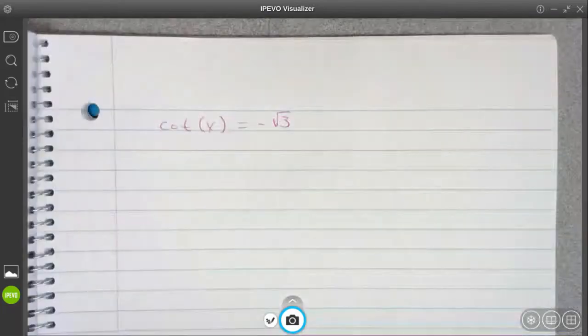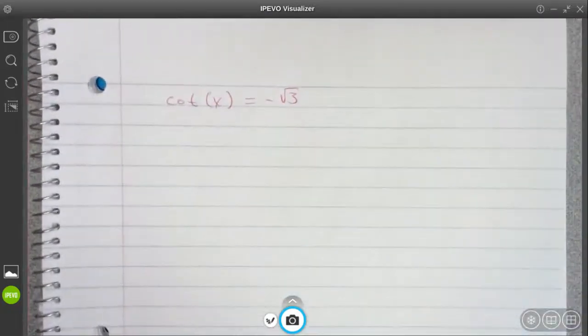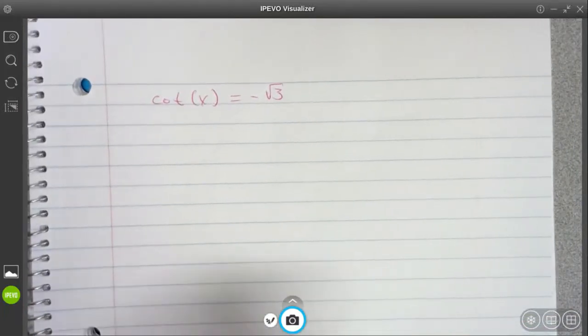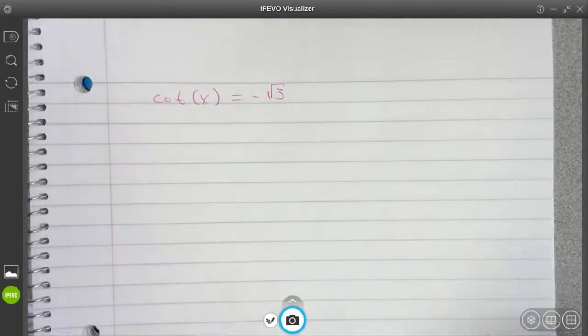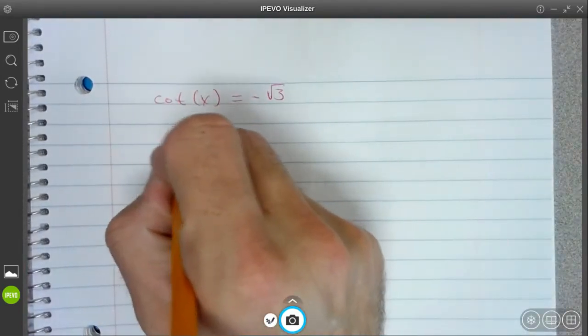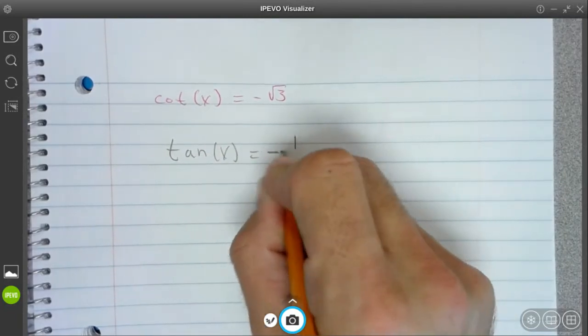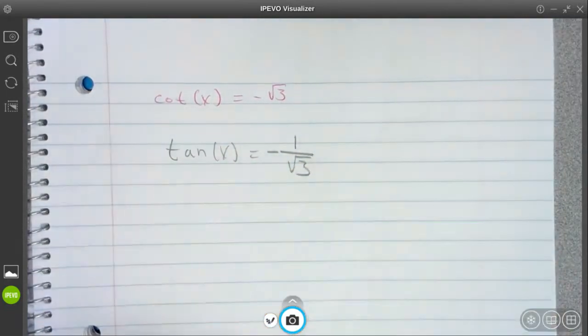Now let's look at one more here, cotangent. So cotangent is equal to negative root 3. So let me flip it. This means that tangent is equal to negative 1 over root 3. And then from here, you can probably reach for your spiderweb, figuring it out here.